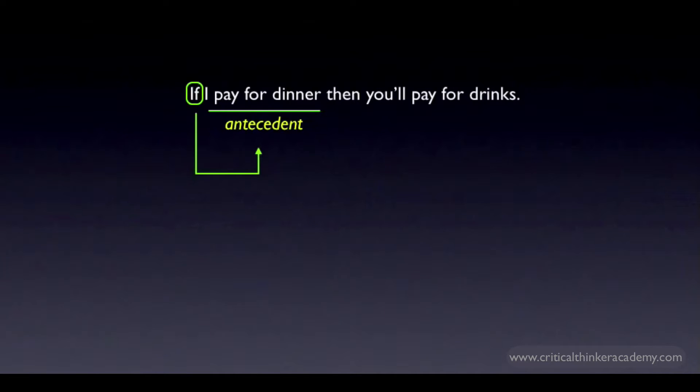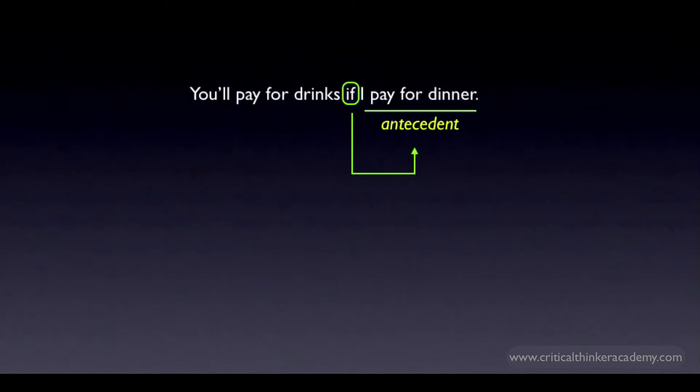Now I can write the same claim like this: You'll pay for drinks if I pay for dinner. Here the consequent is now at the beginning of the sentence, and the antecedent is at the end. But the antecedent is still I pay for dinner. The if flags the antecedent just as it does when the conditional is written in standard form.